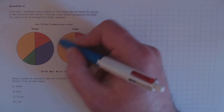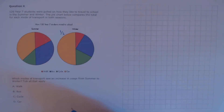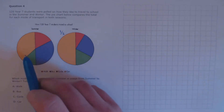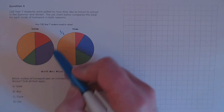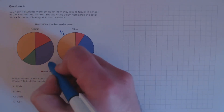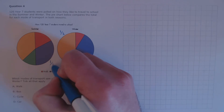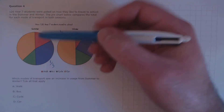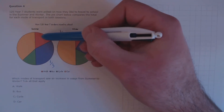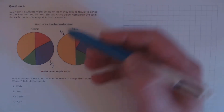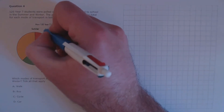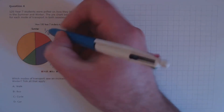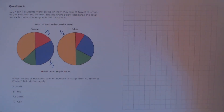For example, the winter walking segment is clearly a half of the chart. Similarly, we can see that bus takes up a whole third of the chart. Between the blue and red regions, a half is contained, and a sixth plus a third is a half.